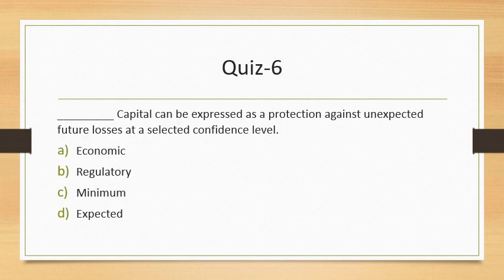Question 6: Which capital can be expressed as protection against unexpected future loss at a certain confidence level? The answer is economic capital. Regulatory capital is calculated to cover losses at predefined parameters. Unexpected losses are calculated and economic capital is set aside for that purpose. Regulatory capital, minimum capital, and expected capital do not have relevance in this context of the bank's credit risk factor.